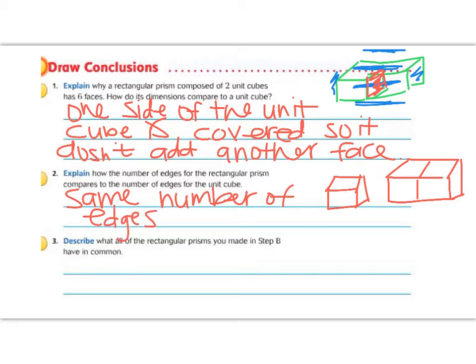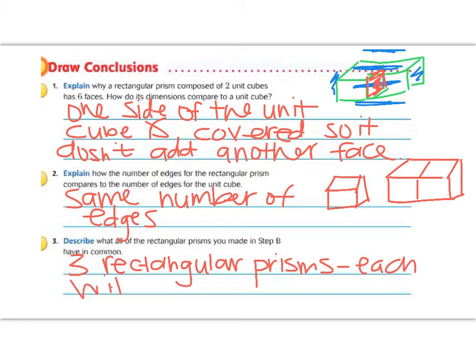Describe all the rectangular prisms that you made in step B. Well, we made 3 rectangular prisms, and they each had different dimensions. Great job, 5th graders. Let's keep going.